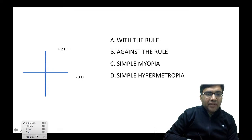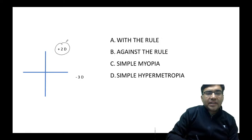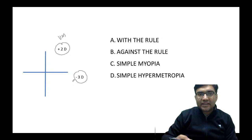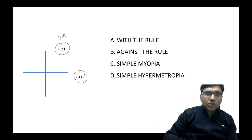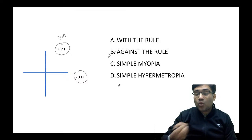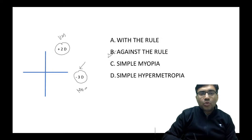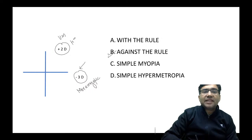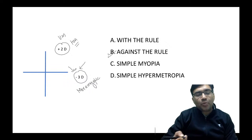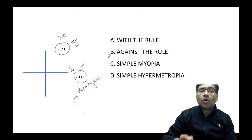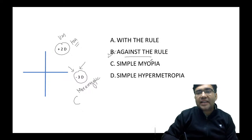Another example: plus 2 diopter in the vertical meridian and minus 3 diopter in the horizontal meridian. The minus 3 diopter is more myopic compared to the vertical meridian which is hypermetropic. We have to look at which meridian is more myopic, not the hypermetropia, when deciding curvature. So this is also against-the-rule astigmatism.